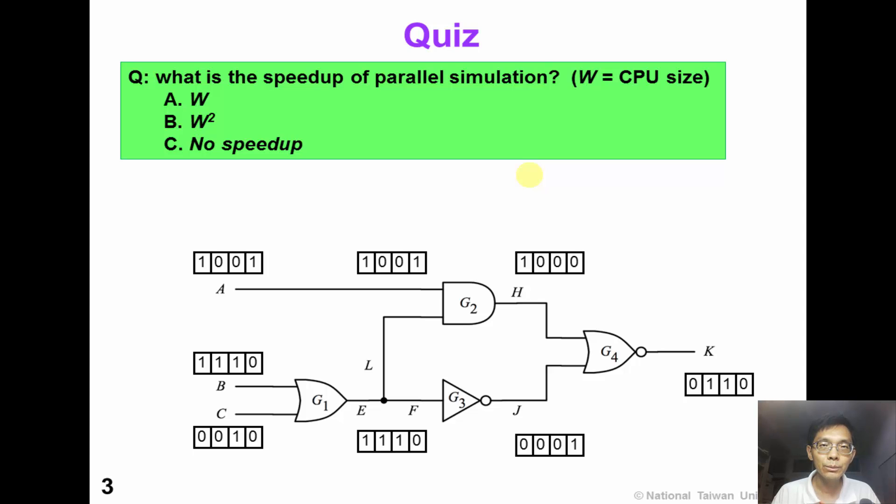So this is a simple quiz for you. What is the speedup of parallel simulation? Suppose that the CPU word size is W. Is it W or W squared or no speedup? The answer is simple. We can have linear speedup W over traditional simulation.